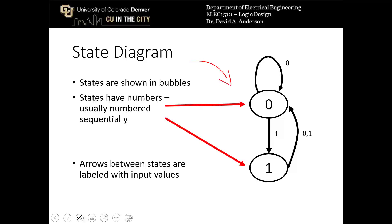There are arrows between the states that are labeled with input values and represent how you transition between states. So for example if we start out in state 0 here and our input is a 0, as you can see here, we return to state 0. If we start out in state 0 and our input is a 1, as you can see here, we transition to state 1.